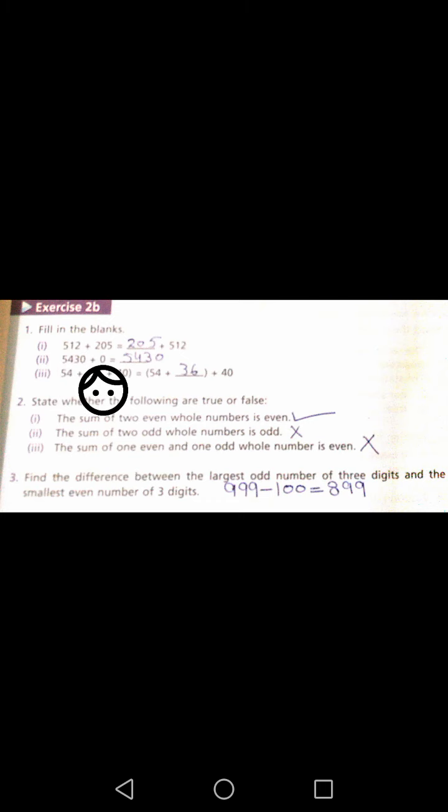5,430 plus 0 is equals to, you can add 0 to any number. The answer will be the same.